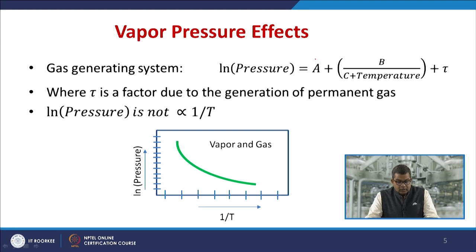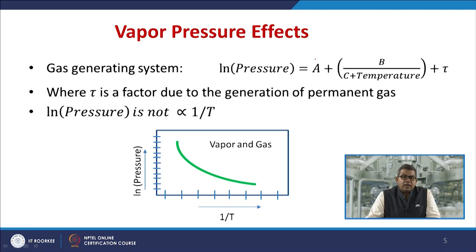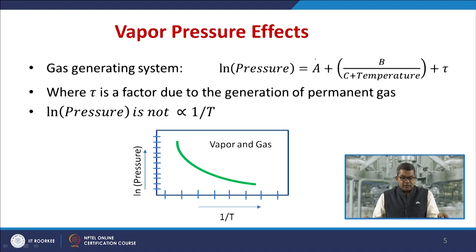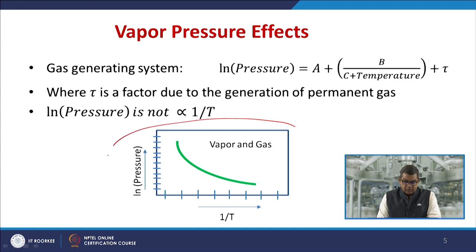For a gas generation system, ln(P) = 1 + B/(C + T) + τ, where τ is a factor due to generation of permanent gas. In that case, ln(P) is not directly proportional to 1/T, and the nature of the plot would differ accordingly.